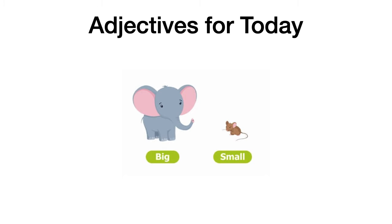Tenemos dos adjetivos que vamos a ver ahora: big, small. Recuerda que tú puedes ir repitiendo conmigo las palabras. Big, small. Como puedes ver ahí, tenemos un elephant y un mouse. The elephant is big — es grande. And the mouse is small — el ratón es pequeño. Big: grande. Small: pequeño.